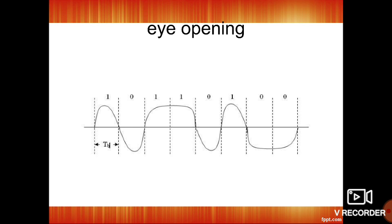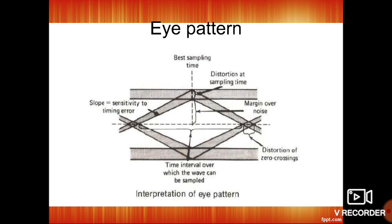The interior region of eye pattern is called the eye opening. The eye opening is like this. For the data, zeros and ones, its opening and closing can be represented. The eye opening is like this. Simply the eye pattern can be drawn like this. That is the interpretation of eye pattern.